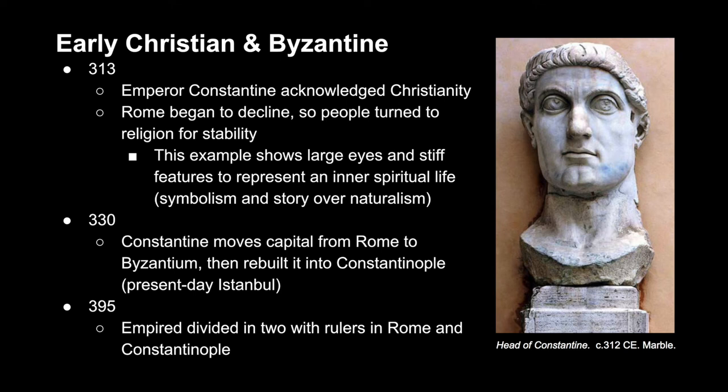Moving on to 330, Constantine moves the capital from Rome to Byzantium, which he rebuilt into Constantinople — present-day Istanbul. In 395, as a result of the capital change, the empire becomes divided with two rulers, one in Rome and one in Constantinople.